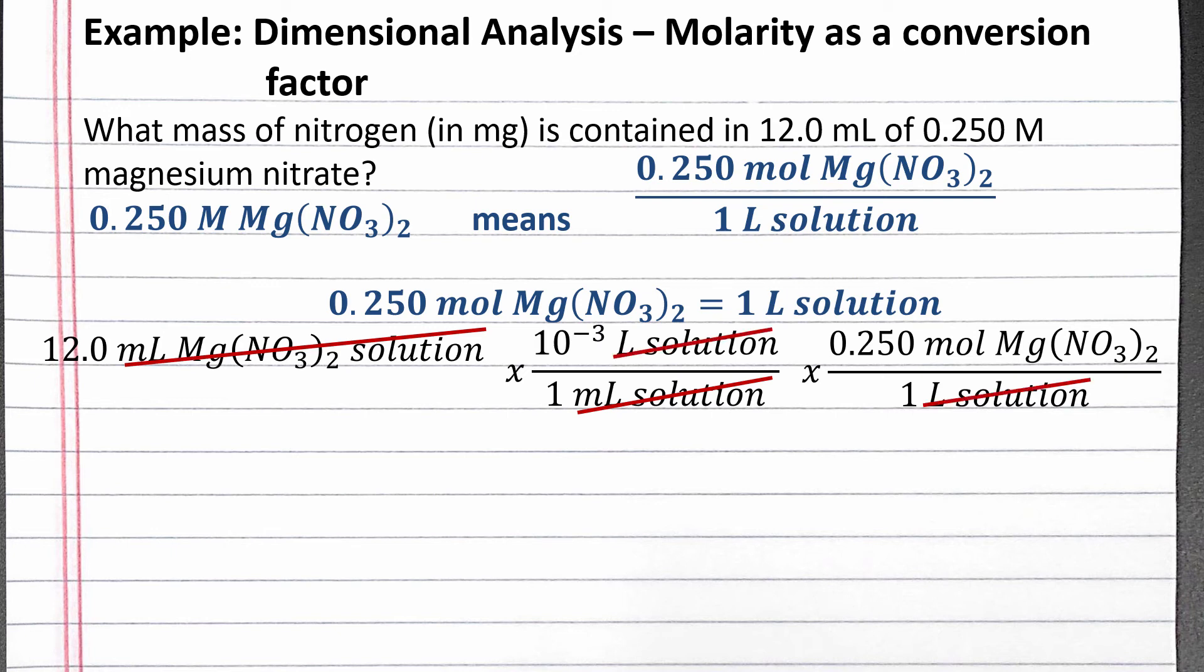Each mole of magnesium nitrate has 2 moles of nitrogen. Next, we can use the molar mass of nitrogen to convert from moles of nitrogen to grams of nitrogen.